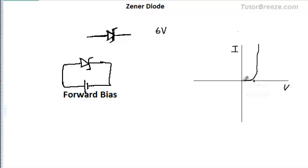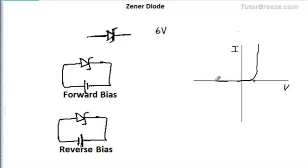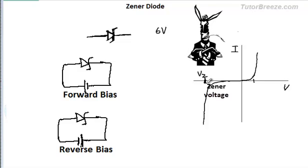Now, in case of reverse bias, the current is practically 0 and at a certain voltage which is called the Zener voltage, the current increases sharply. And this is what we are interested in. This is the constant voltage that we talked about a short while ago. The voltage which does not change.